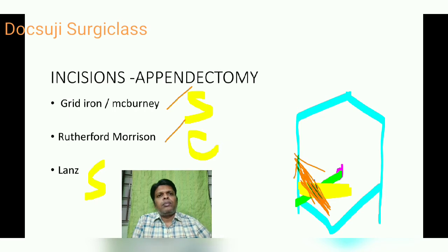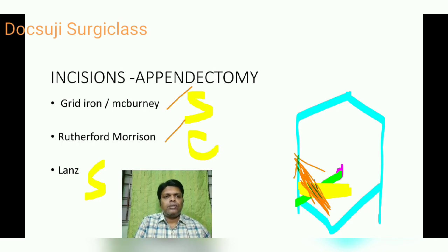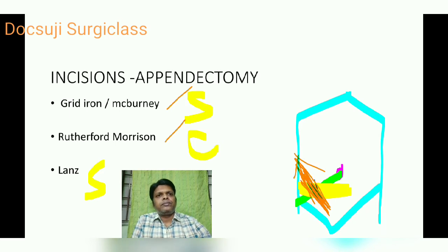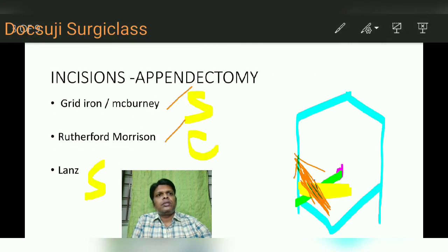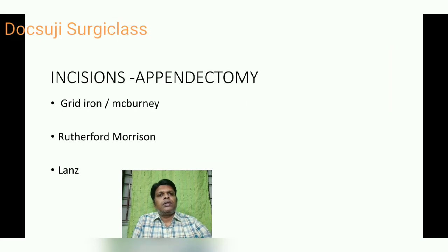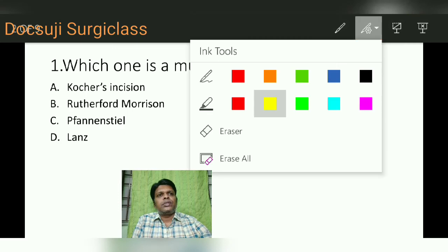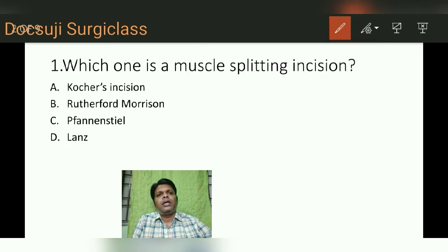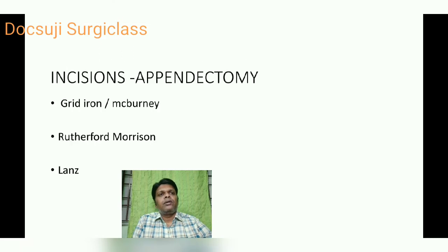I have put a separate video on all abdominal incisions and the link is in the description box — go and watch that video. So the answer for this question is obviously Option D, the Layens incision, because all other incisions listed are muscle cutting incisions.